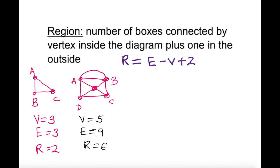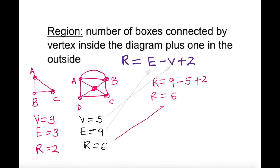Does that make sense? Let's verify with the formula. Regions equals edges minus vertices plus two: nine minus five plus two. Nine minus five is four, plus two is six — bingo! So you don't really have to remember this formula as long as you can count the bounded boxes inside the diagram.